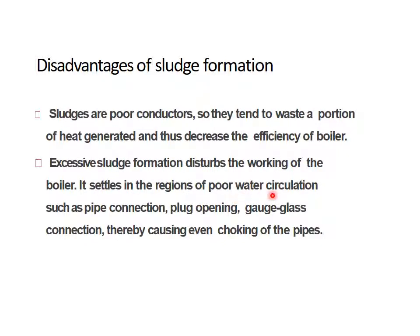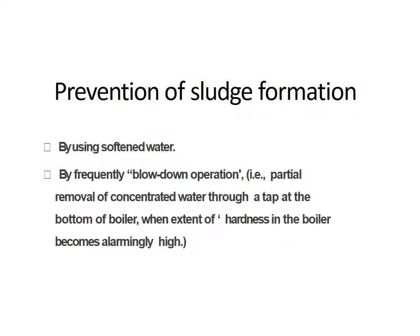Disadvantages of sludge formation: sludge is a poor conductor, so it tends to waste a portion of the heat generated and decreases the efficiency of the boiler. Excessive sludge formation disturbs the working of the boiler by settling in regions of poor water circulation such as pipe connections, plug openings, and gauge glass connections, causing blocking of the pipes.